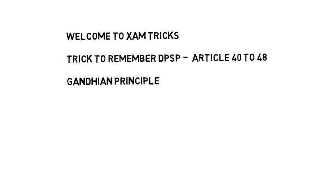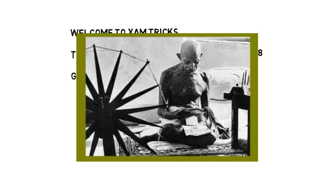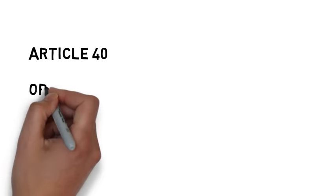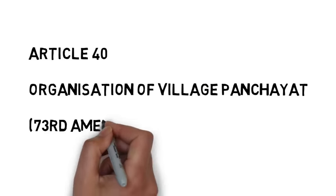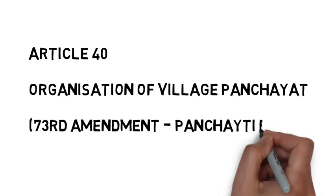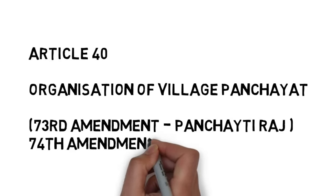We all know that Gandhiji always favored a self-sufficient village and cottage industries. He voiced his concern for alcoholism and stood for the upliftment of weaker castes. All these articles are based on these very principles of Mahatma Gandhi. First, we have Article 40, which provides for the organization of village panchayats.